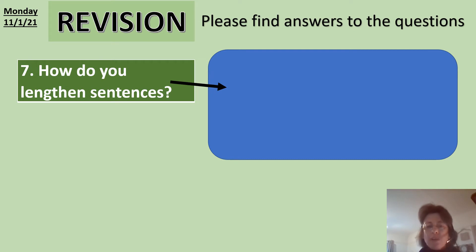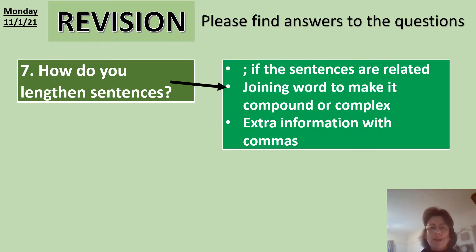So how do you lengthen sentences? Pause the video while you have a think and then all will be revealed. You lengthen sentences by using a semicolon if the sentences are related. You can use a joining word to make it compound or complex. And to make a complex sentence, you can use extra information, obviously using commas around that extra information.